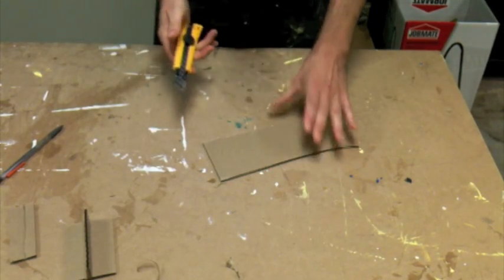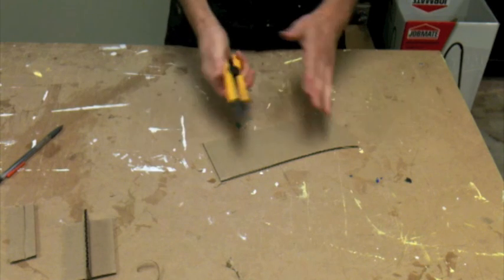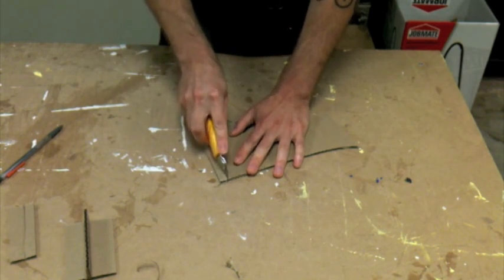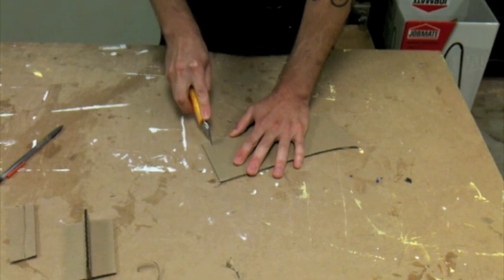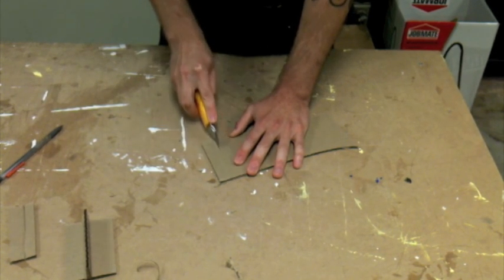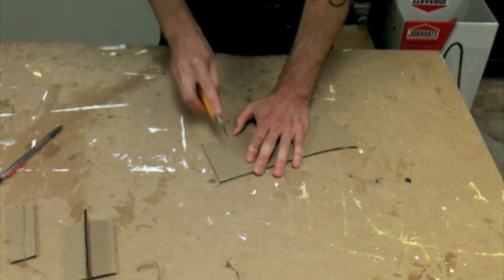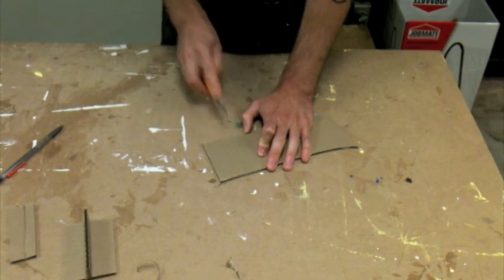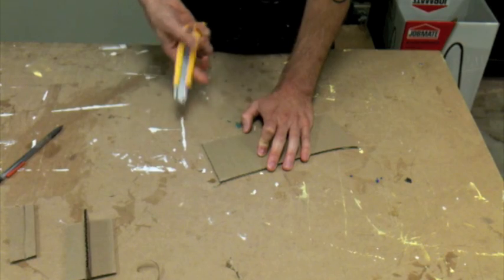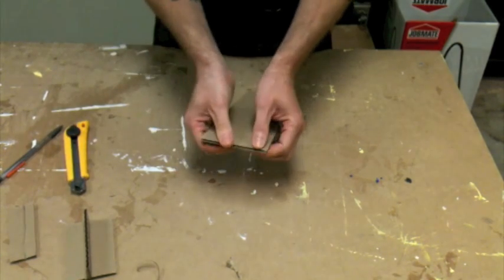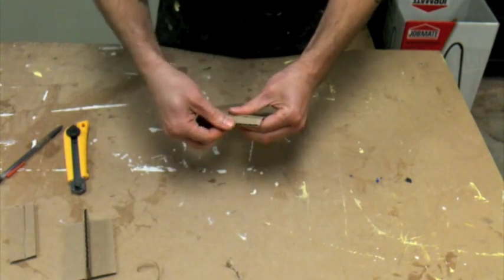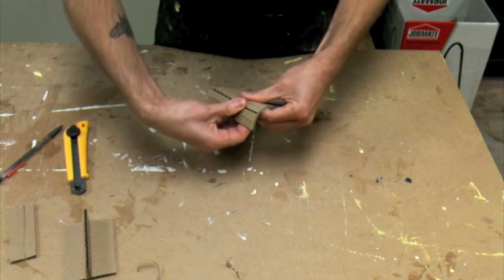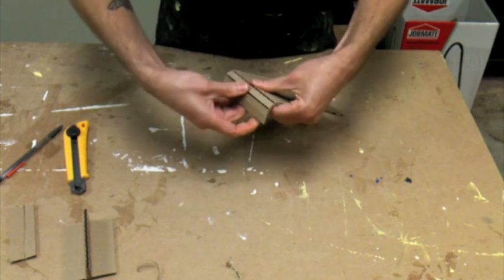So that's another thing that you can use scoring for. And then, say you were doing something more sculptural and you wanted to make a bunch of bends. Using your blade to score a whole bunch of lines really close together, you can get a very articulated bend, bending away from the cuts.